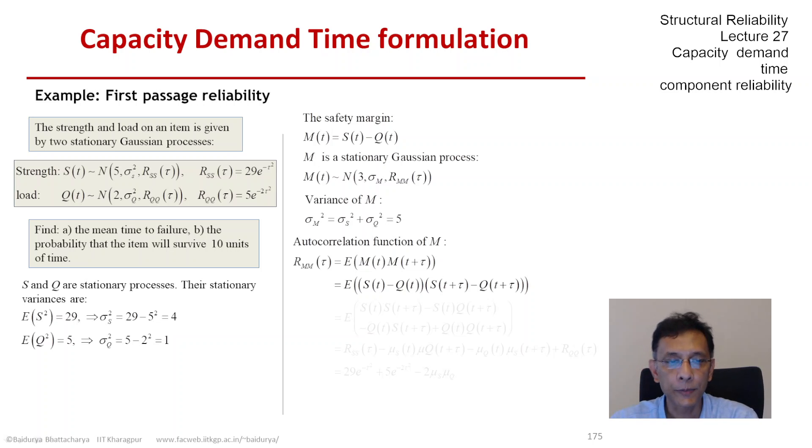We can expand those and it turns out to be this expectation. Let us take term by term. The expectation of S(t) times S(t+tau) by definition is the autocorrelation function of S, so it's R_ss(tau), and likewise we can find the rest.